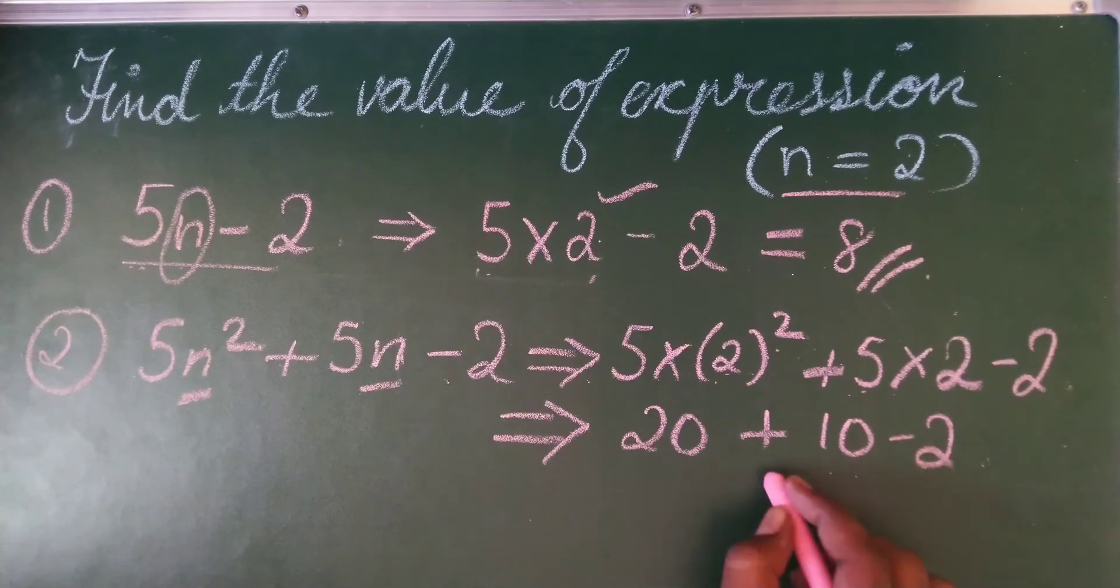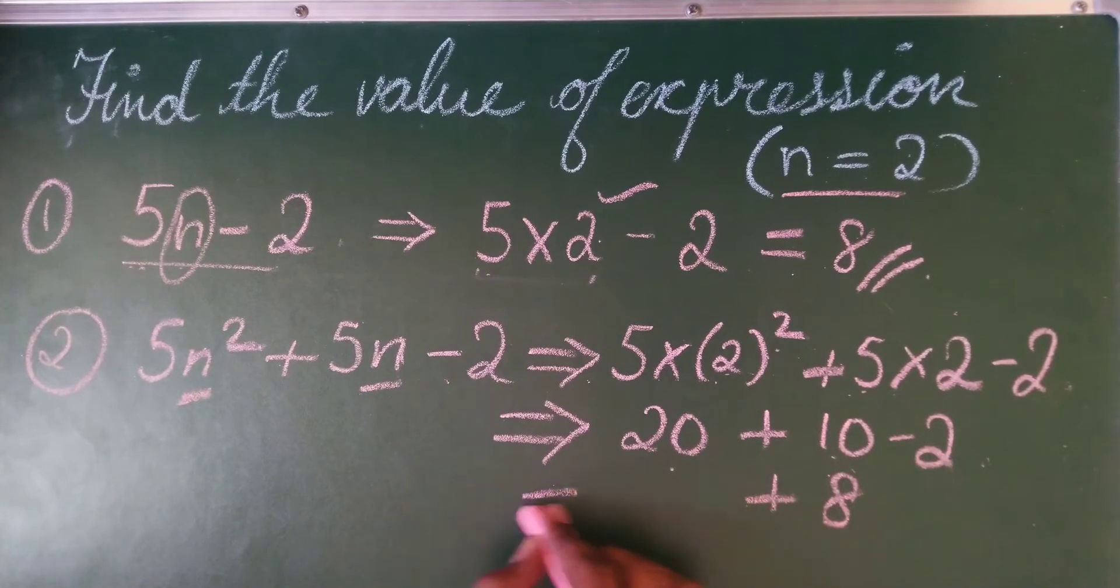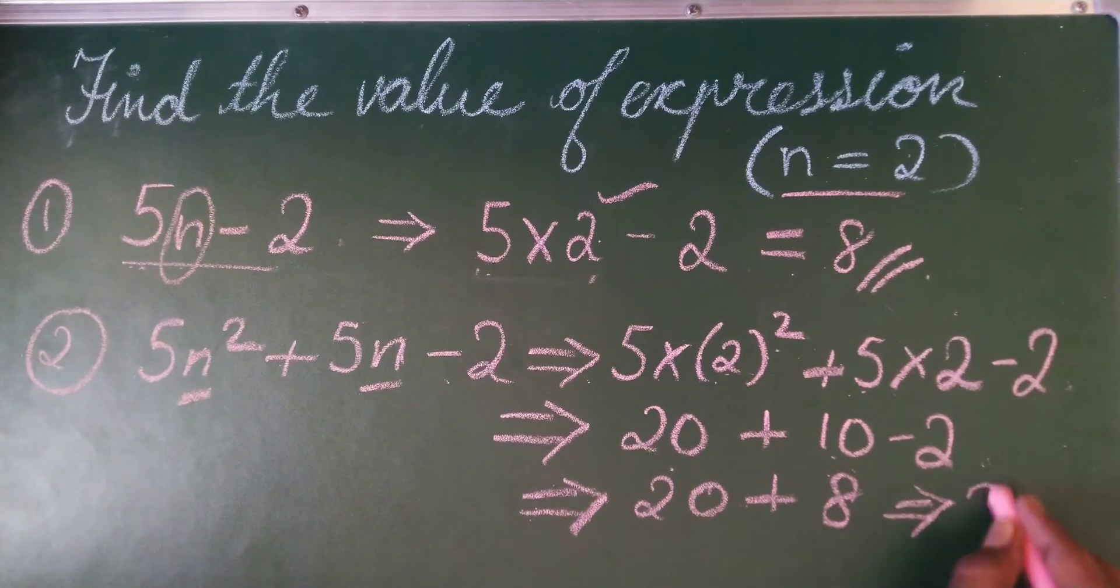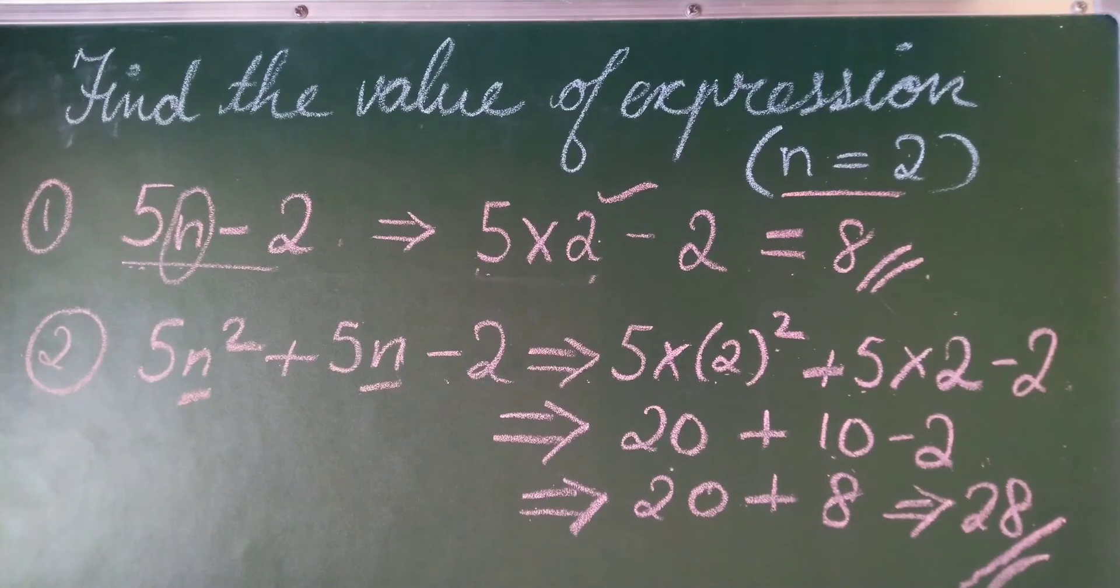So I can write 8. 10 minus 2 is 8. 8 plus 20 is how much? 28. So this is the answer, the answer of the given two problems.